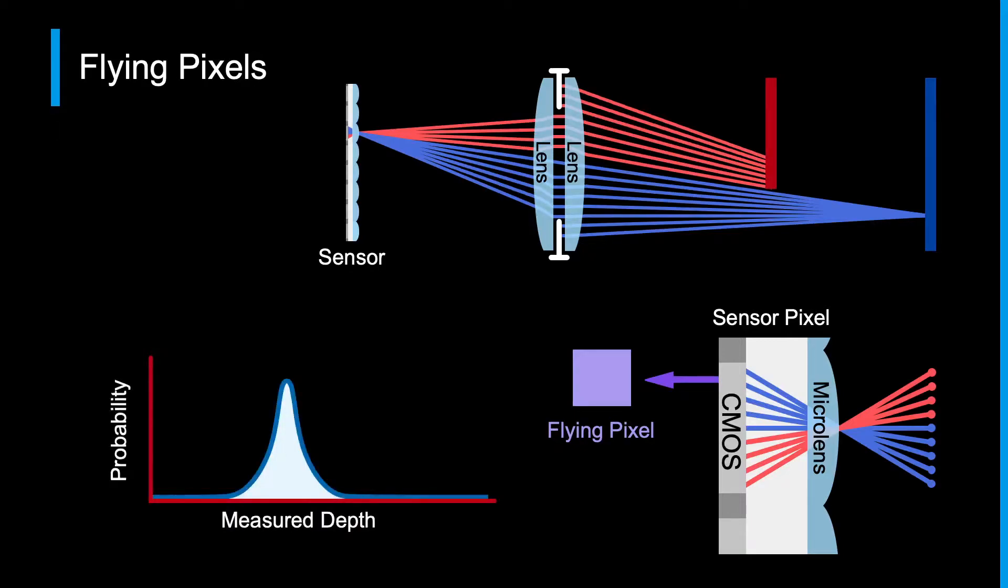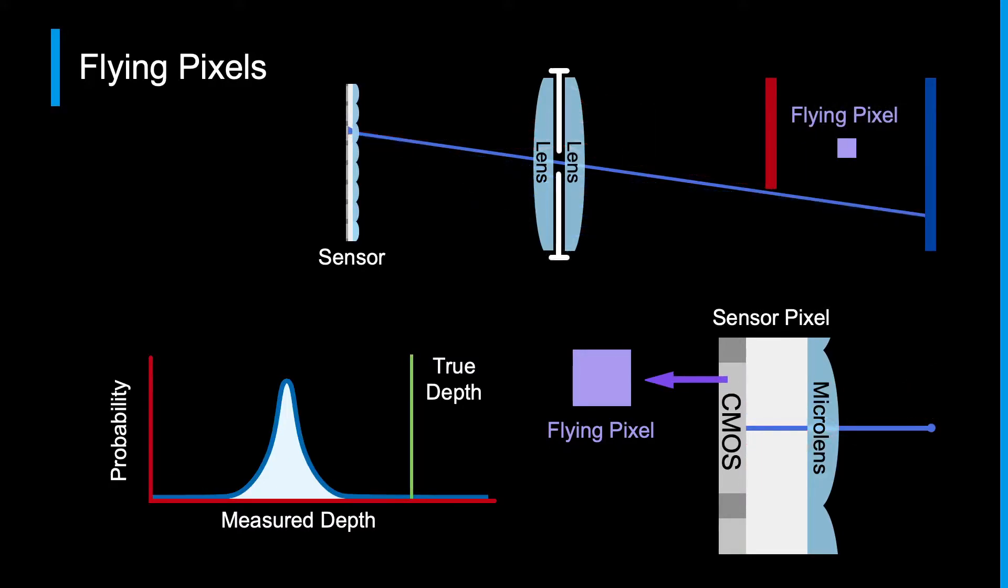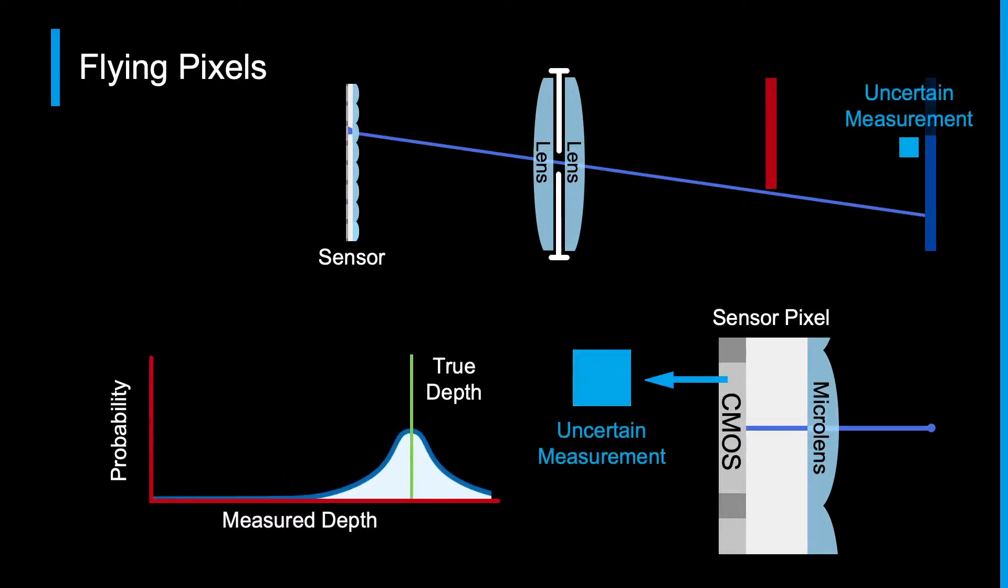This appears to be a confident measurement at a completely wrong depth, floating in empty space. We can trivially avoid these errant light paths by narrowing the aperture, but while this could reduce the effects of flying pixels, it's not light efficient and leads to a high noise susceptibility in the measurement.